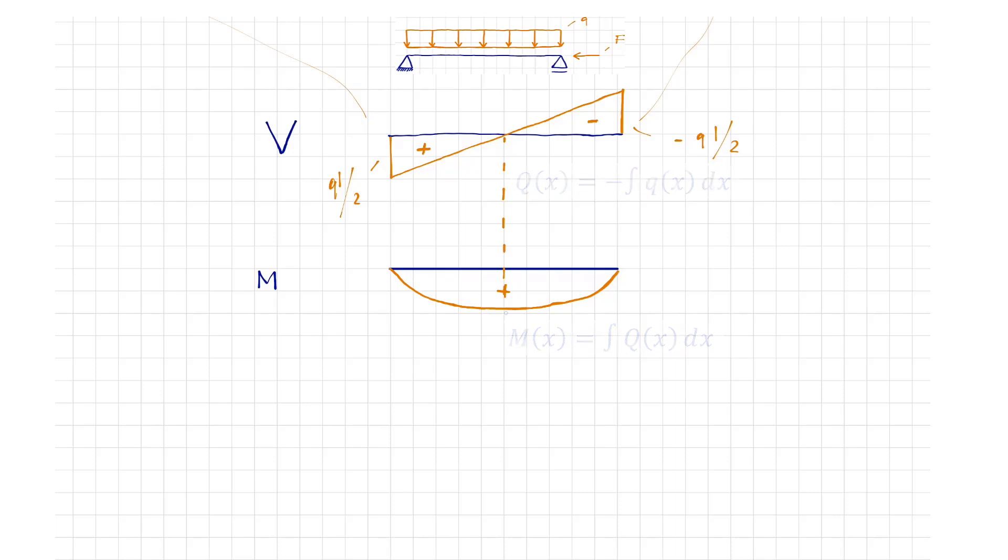This is the reason why, with a constant distributed load, the shear force runs linearly and the moment runs quadratically along the beam.